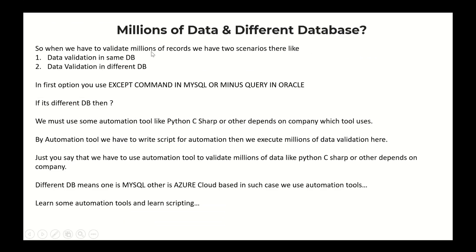When we have to validate millions of records, we have two scenarios: data validation within the same DB and data validation in a different DB. In the first option, you can use the EXCEPT command in MySQL or the MINUS query in Oracle. First SELECT query MINUS second SELECT query — that is source SELECT query and target SELECT query. Whichever is not present in source will display if present in target, and vice versa.